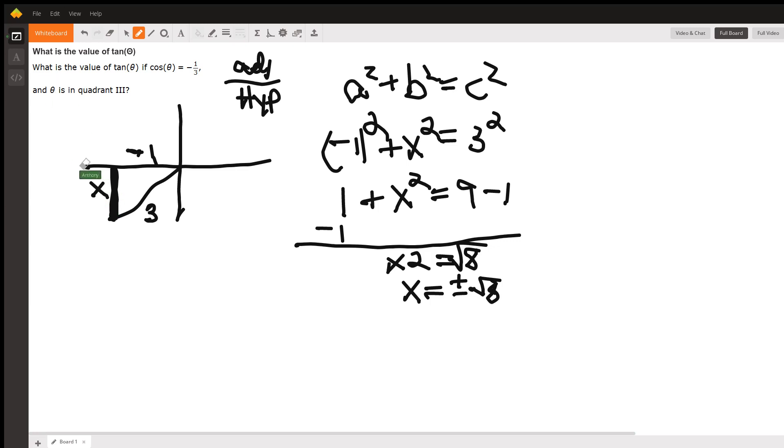So I'm going to erase that now, that x, and I'm going to write here that it is negative square root of eight. It's below the x-axis, so it's a negative number.